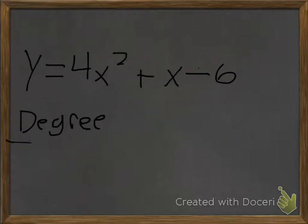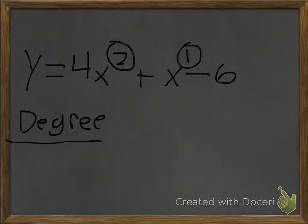The degree of a polynomial function — whenever you're looking for degree, you always want to make sure you look at the exponents. Remember, x is the same thing as x to the 1 power. You always want to look at the exponents to find the degree, and your degree is going to be your highest exponent. In this case, it's going to be 2.